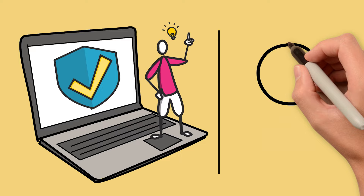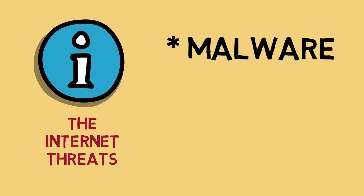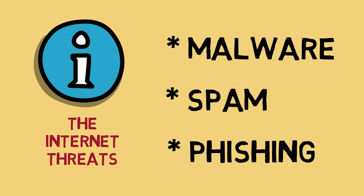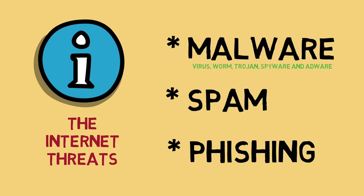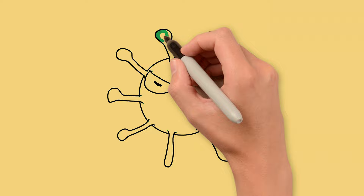Here are some threats you should be aware of when using the internet. We have Malware, Spam, and Phishing. Under Malware, we will discuss some of its variants which are Virus, Worm, Trojan, Spyware, and Adware. Under Phishing, we will understand what is pharming. To begin, let us understand first what is malware.